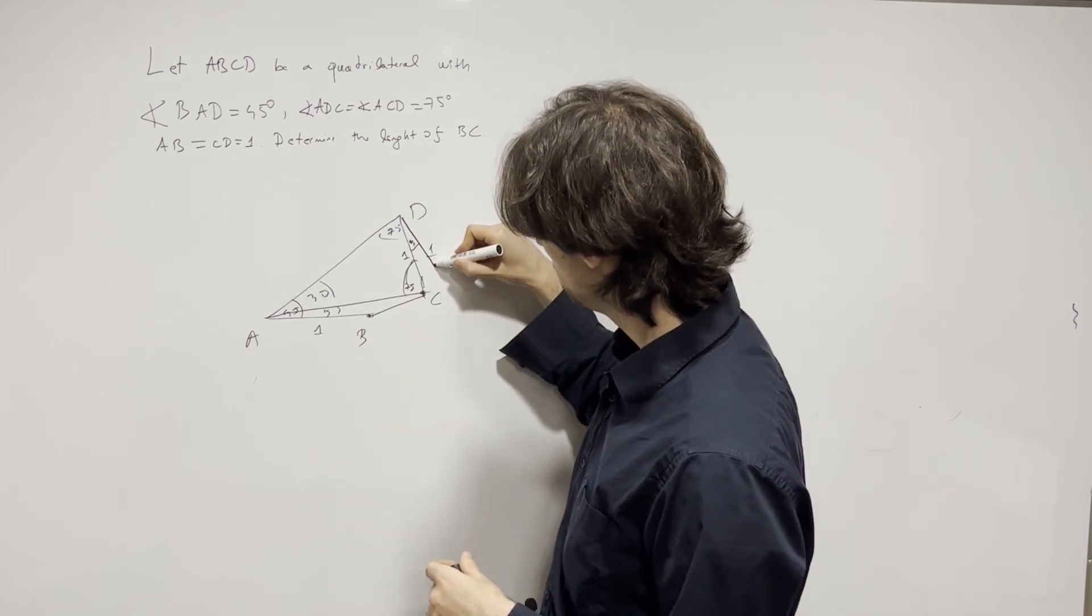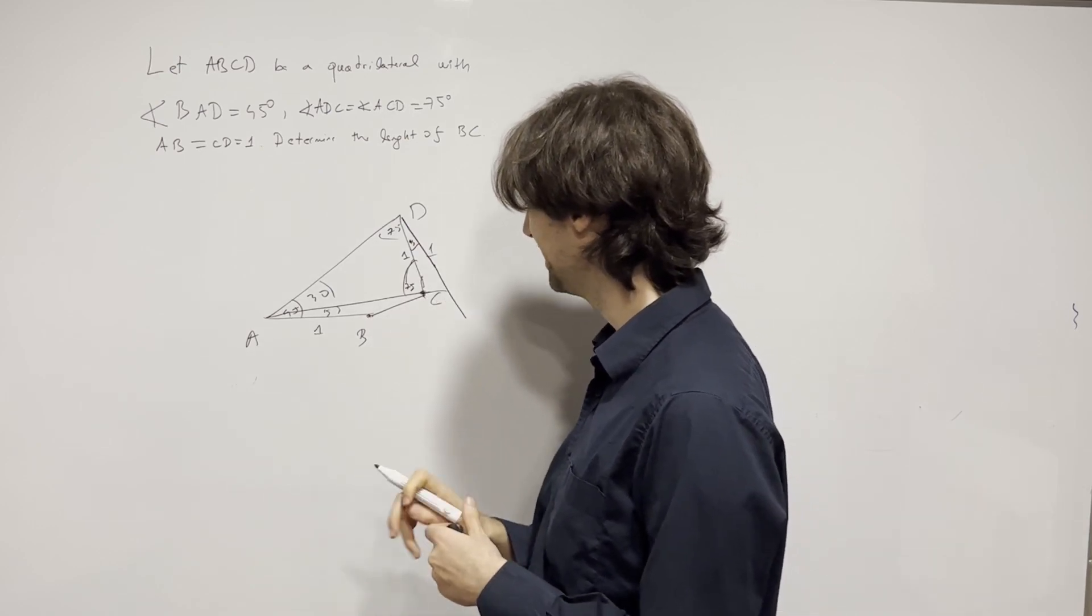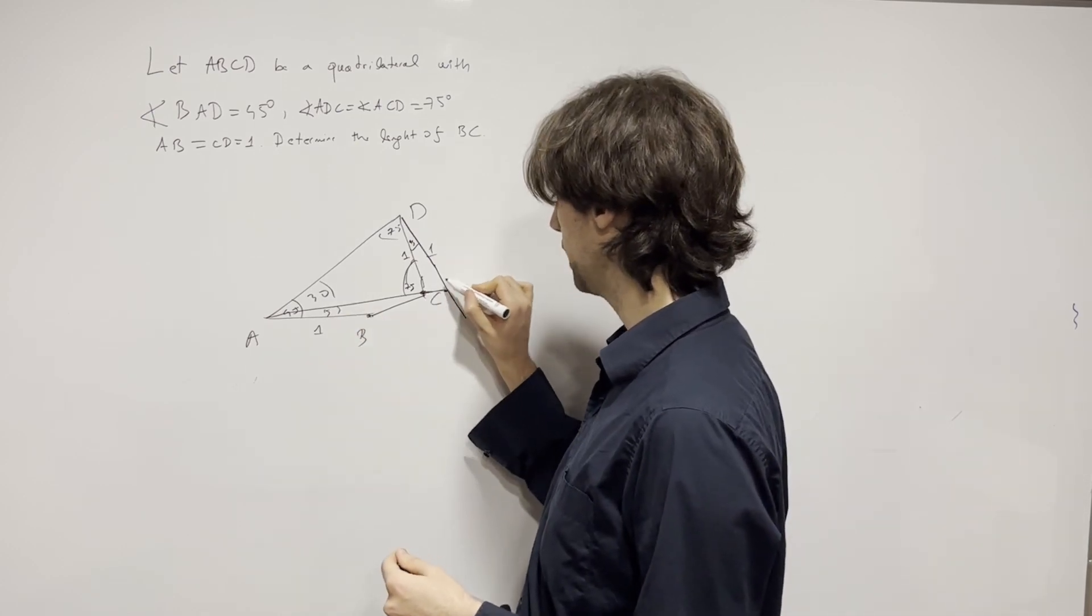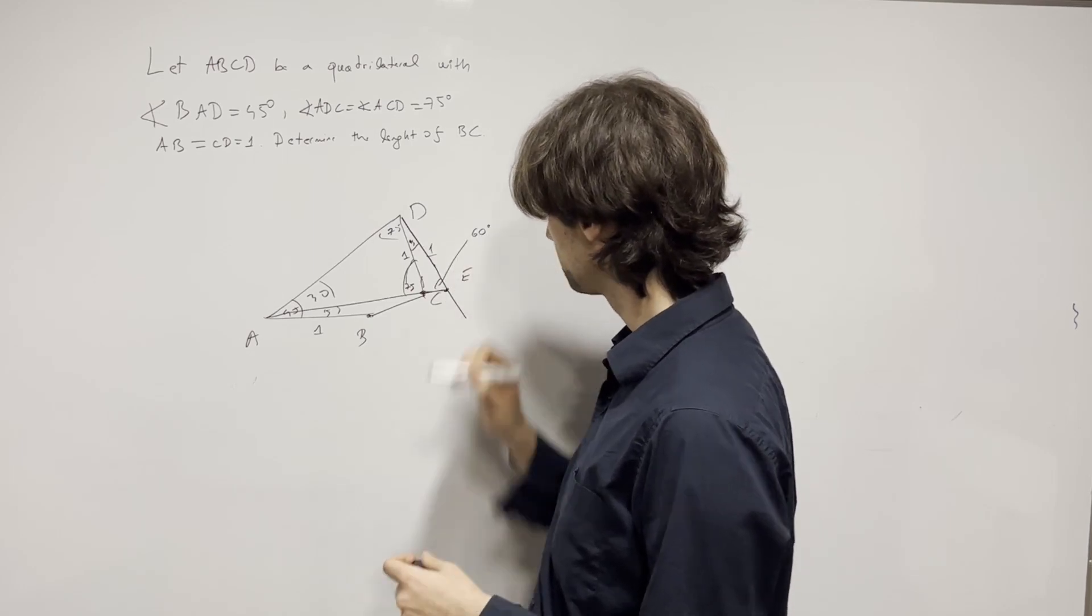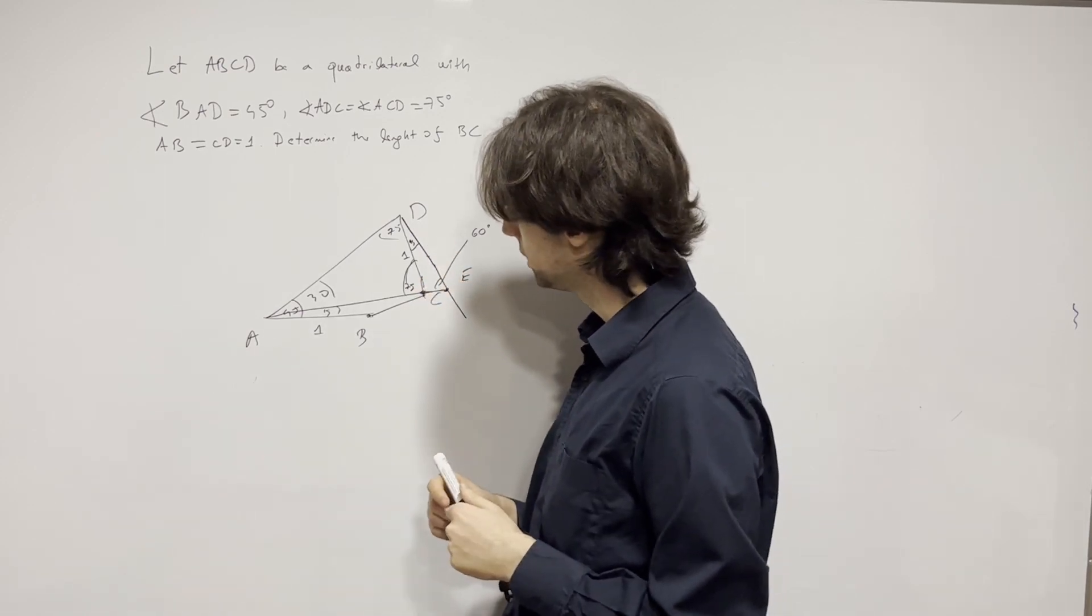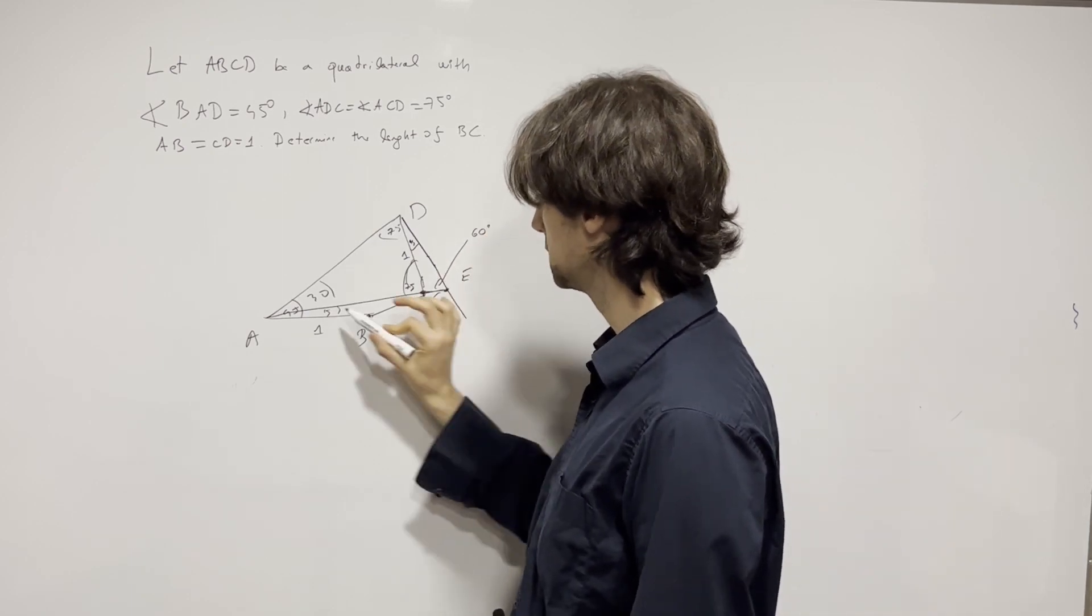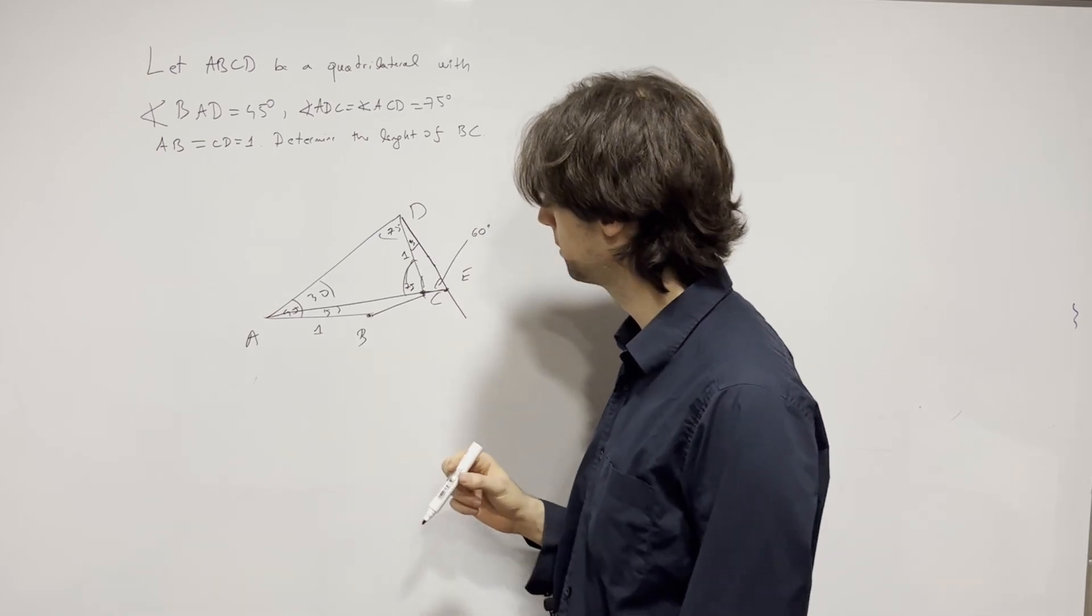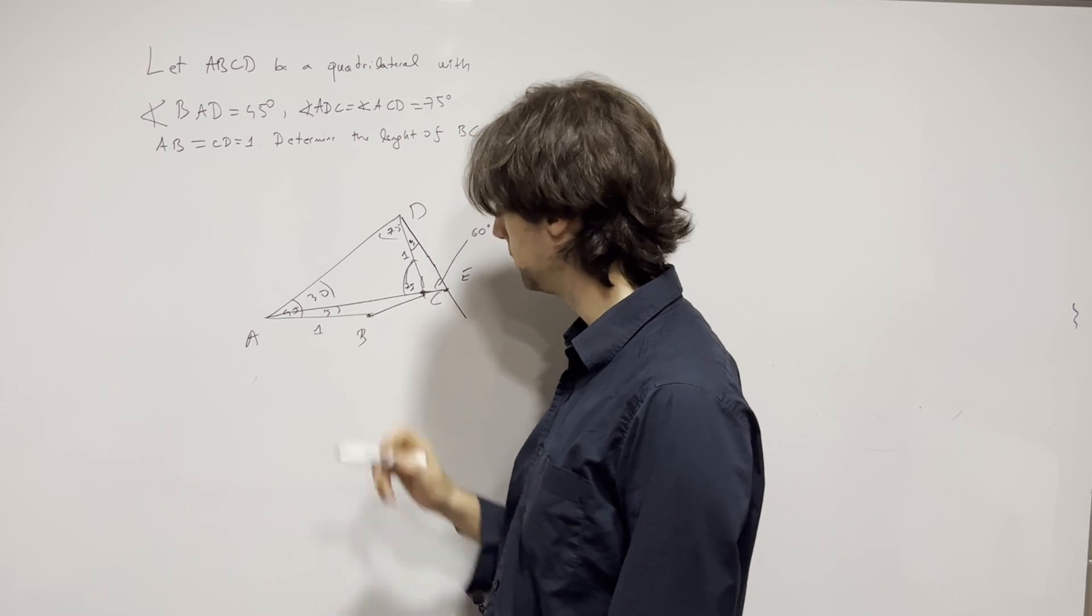Or maybe if I connect this to this, maybe if I intersect them like this I could get something. Maybe if I intersect AC with this angle, let's see what happens. Call this point E. Now this angle is 60, so I have 60, I have 30. Now I know that if this is x, this is 2 times x. That can be useful sometimes, but I've not yet been able to connect it with this thing right here.